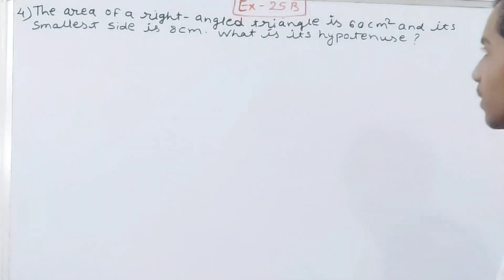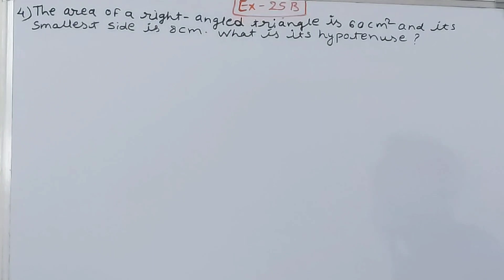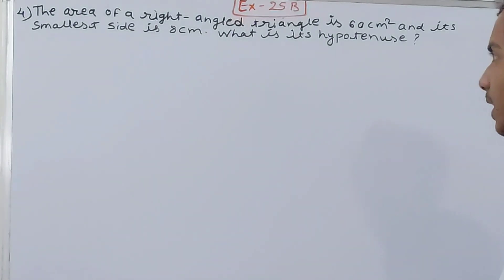The area of a right-angled triangle is 60 square centimeters and its smallest side is 8 centimeters. What is its hypotenuse?